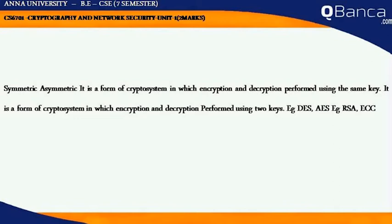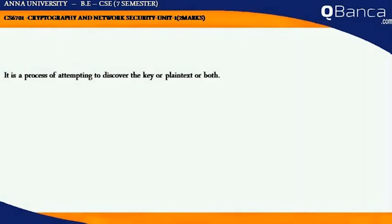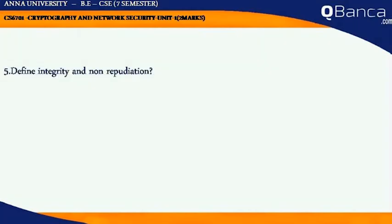Examples of Symmetric Encryption: DES, AES. Examples of Asymmetric Encryption: RSA, ECC. Cryptanalysis is a process of attempting to discover the key or plaintext or both.